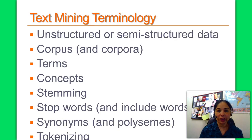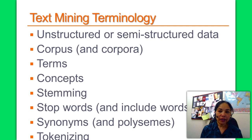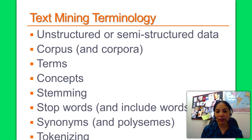Some key text mining terms: unstructured data means non-specific format text, while structured data is a predetermined format database. A corpus is a large and structured set of texts prepared for conducting knowledge discovery. A term is a single word or multi-word phrase extracted directly from the corpus by natural language processing. Concepts are features generated from a collection of documents by statistical, rule-based, or manual methods. Stemming is the process of reducing inflected words to their base or root. Stop words are noise words filtered out prior to processing of text.